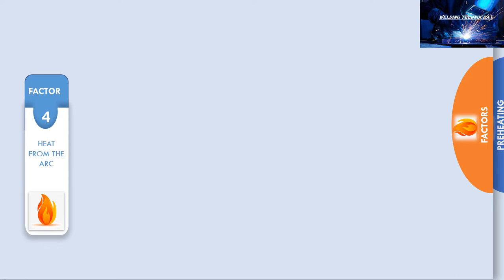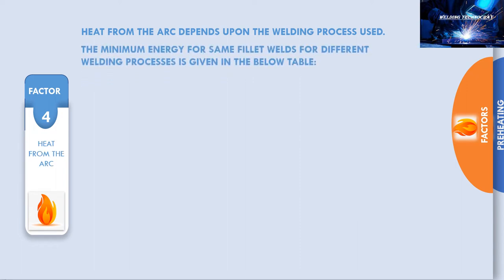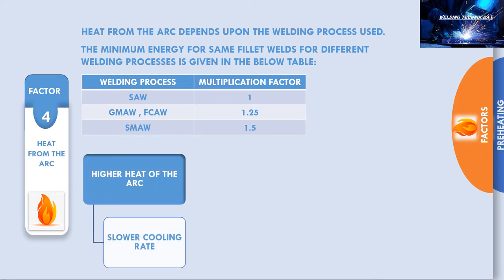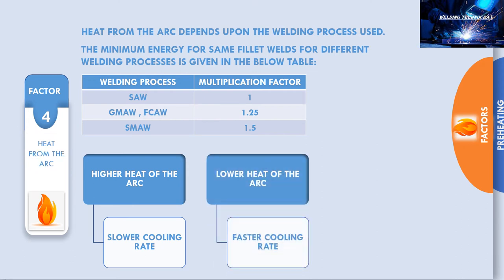The fourth factor is heat from the arc. The heat from the arc depends upon the welding process that has been implemented. The minimum energy for the same fillet weld for different welding processes is given in the table. For the same fillet weld the highest energy is required in SMAW and the lowest is required in SAW process. Higher heat of the arc results in a slower cooling rate, and lower heat of the arc results in a faster cooling rate. So the process with lower heat of the arc requires higher pre-heating.